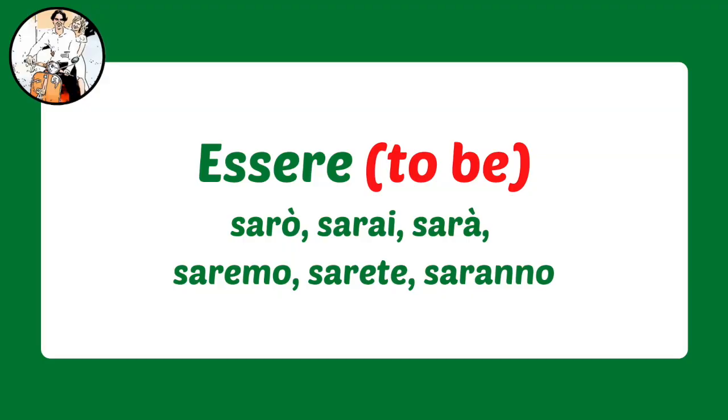Now, there are two very important irregular verbs — we'll cover more irregular verbs in the next video, but these two are too important not to cover right now. They are essere (to be) and avere (to have). Essere: io sarò, tu sarai, lui/lei sarà, noi saremo, voi sarete, loro saranno.